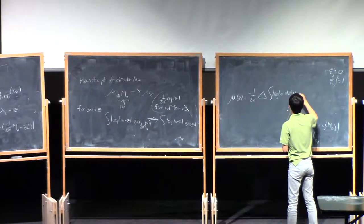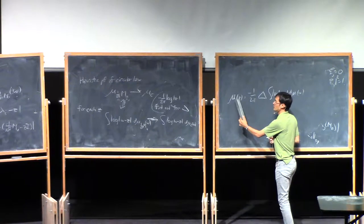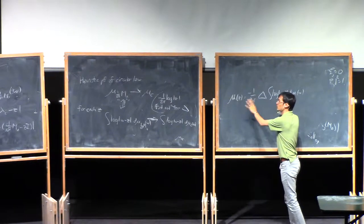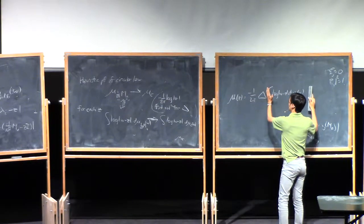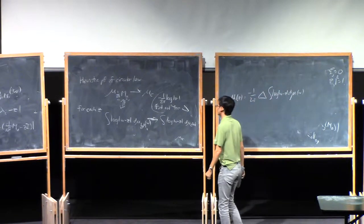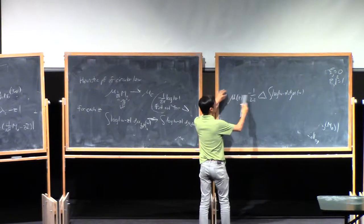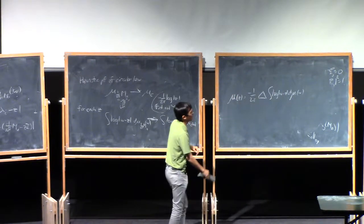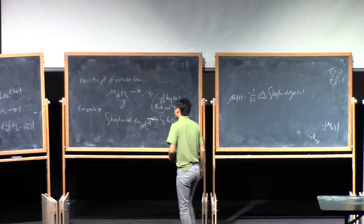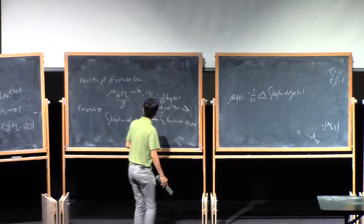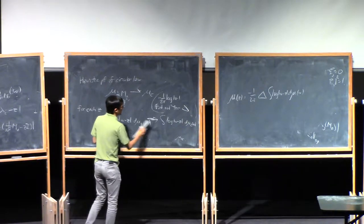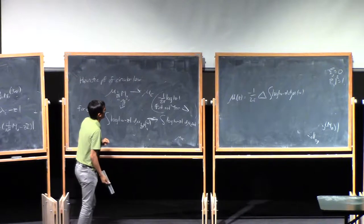If your measure is not continuous, you have to interpret this in an appropriate distributional sense. But roughly speaking, once you know the potential, you can take the Laplacian and basically recover your measure. It works distributionally: you take a test function, test it on both sides, and do some abstract analysis. Using this type of argument you can actually make this step — this step is fairly well understood. So you just need to understand the log potentials.